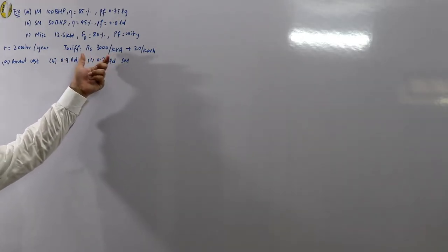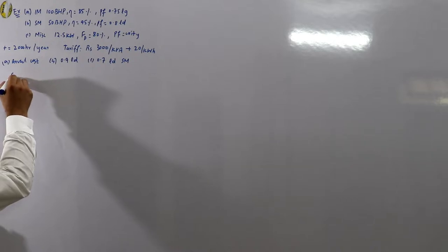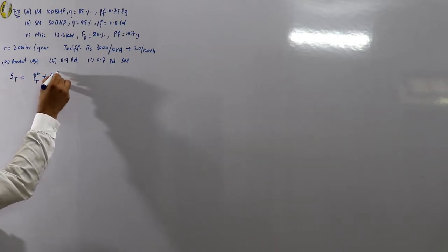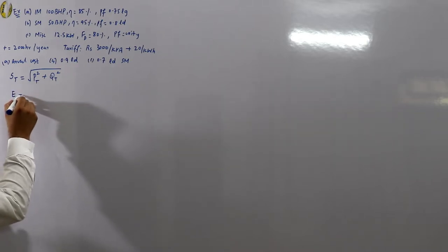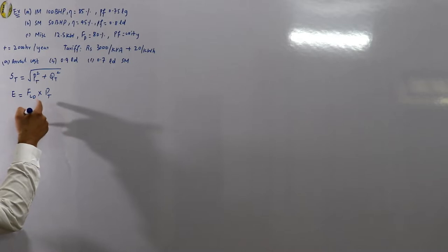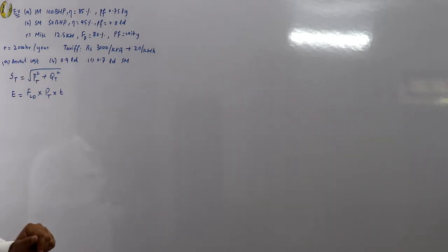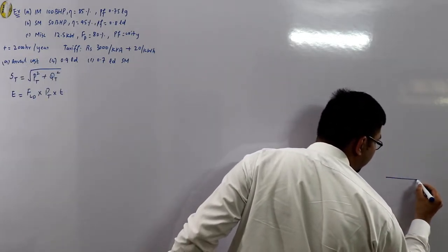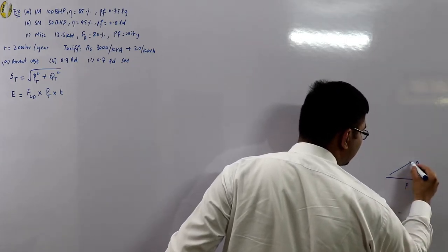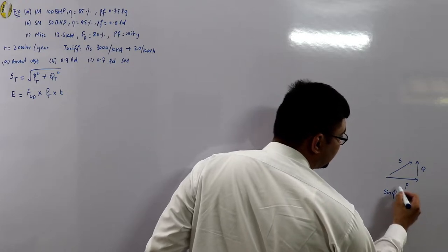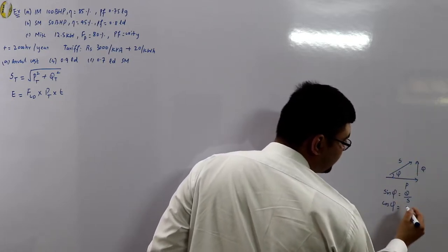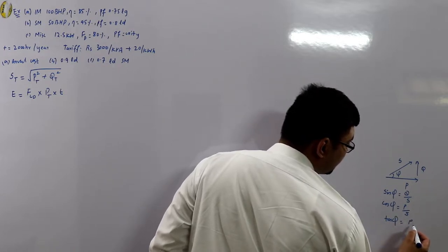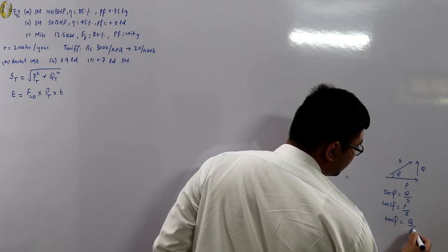You need to calculate the maximum demand, which means calculating total kVA: S = √(P_total² + Q_total²). For energy units, E = maximum demand × time. Using the power triangle: sin φ = Q/S, cos φ = P/S, and tan φ = Q/P. These are the key definitions we'll use.